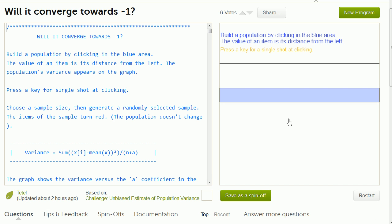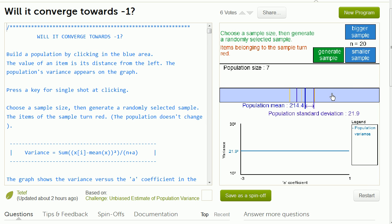So the way this starts off, and I encourage you to go try this out yourself, is that you can construct a distribution. It says build a population by clicking in the blue area. So here we're actually creating a population. Every time I click, it increases the population size. I'm just randomly doing this.